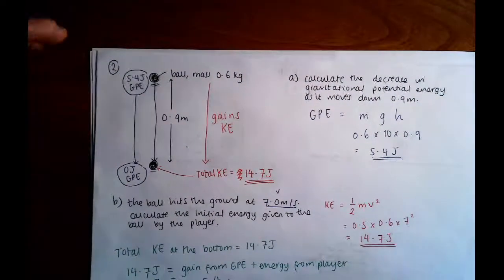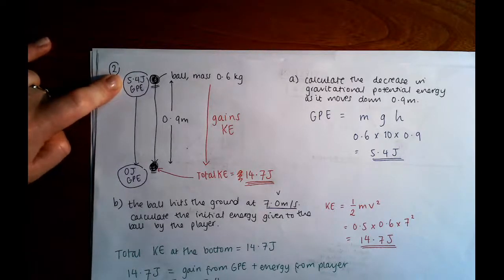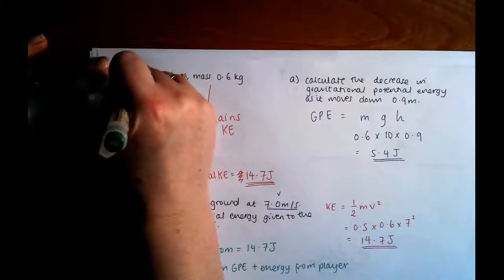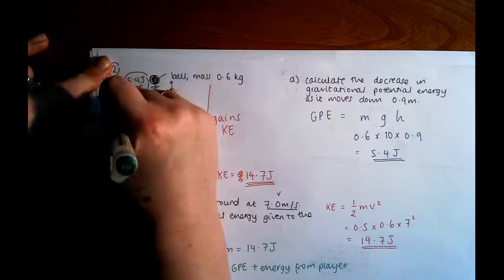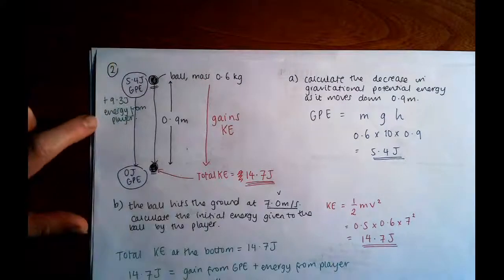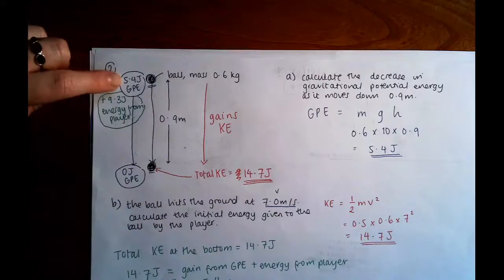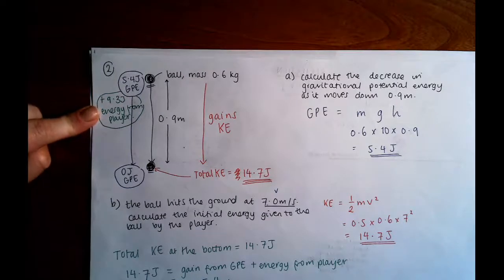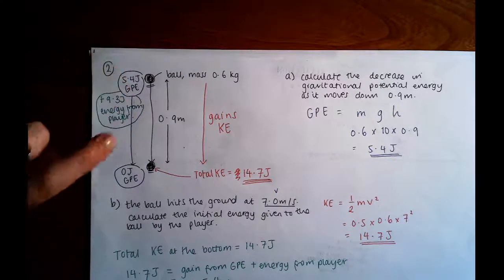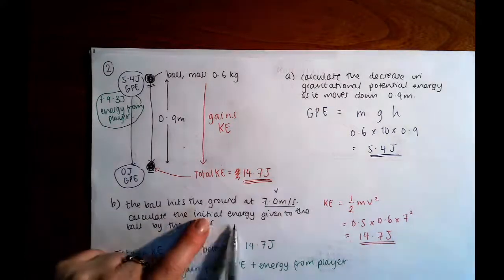Going back to the diagram: at the starting point, the ball has 5.4 joules of GPE plus 9.3 joules of energy from the player. The ball doesn't lose the player's energy as it travels down — it only loses the potential energy. As it travels down, the 9.3 stays as kinetic energy from when it was kicked, and then the 5.4 is added to it because it's converted to kinetic energy. That's how you get your total, and that's how we know the initial energy given by the player.